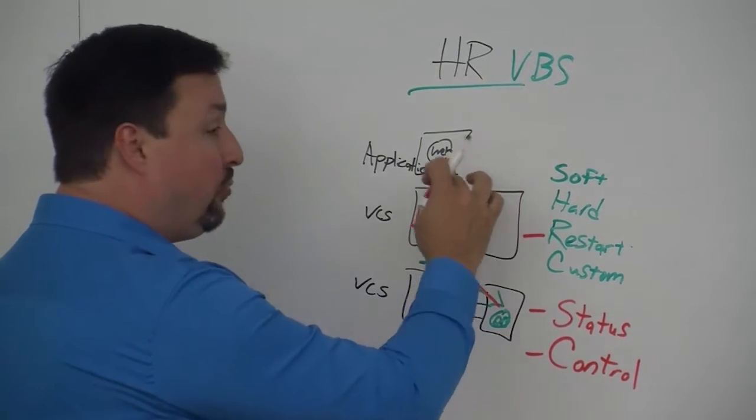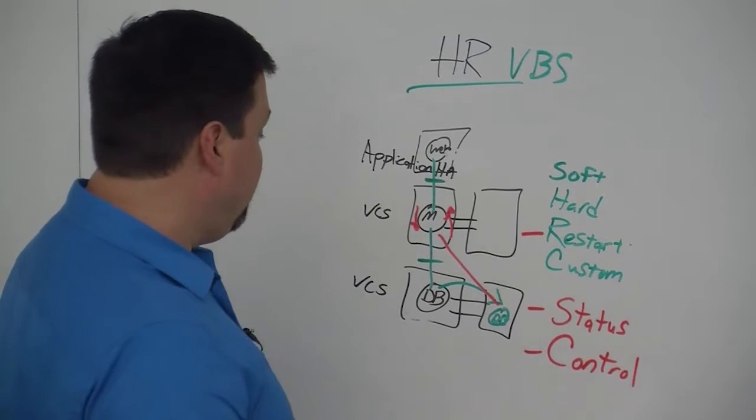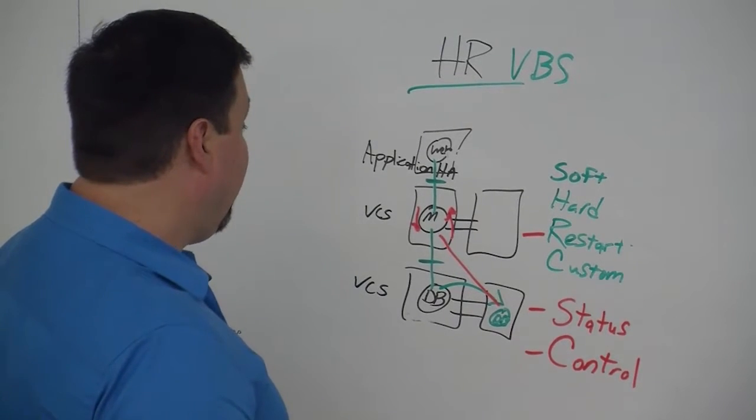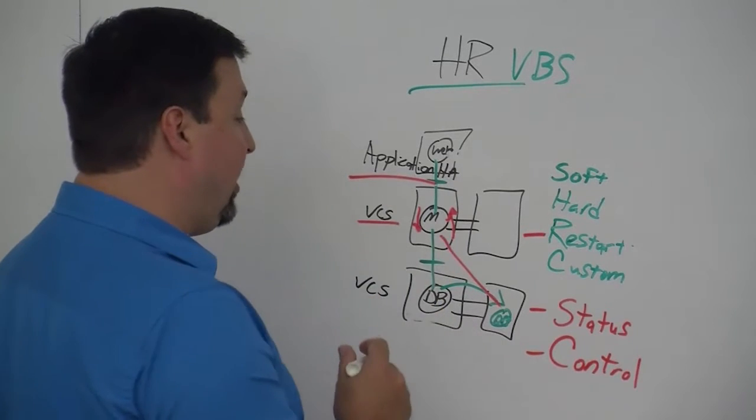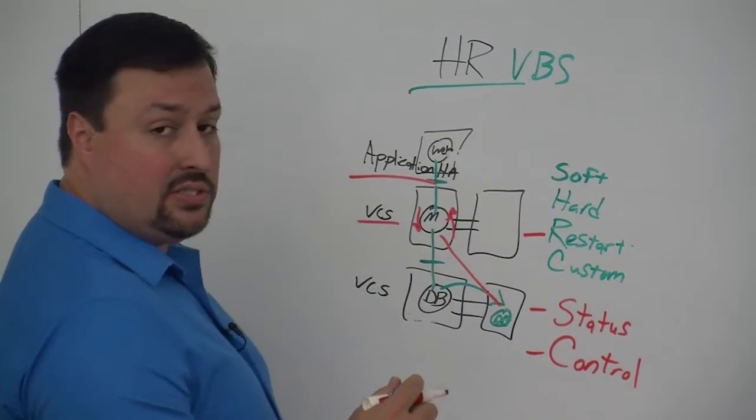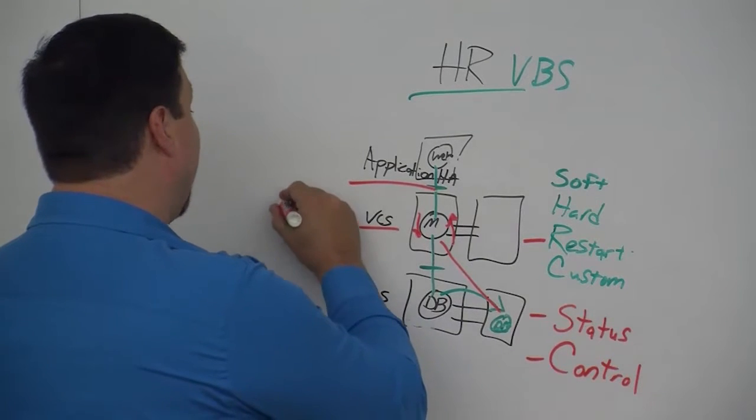A couple other things to note: we support VCS and Application HA as far as control tiers. They need that software in the environment to work. We also support Microsoft failover cluster. That's relatively new, correct. That is also 6.1 as well.